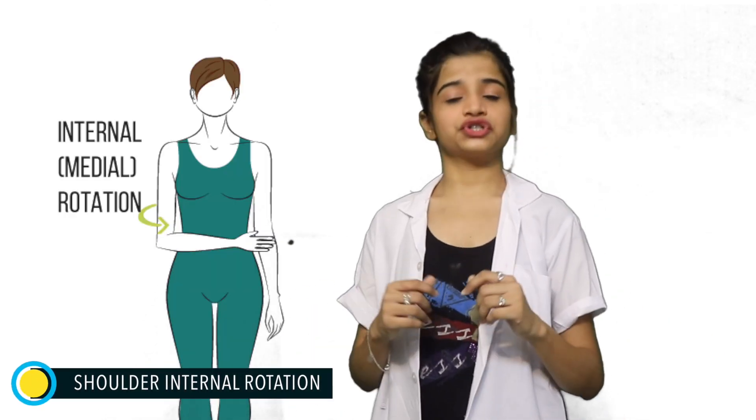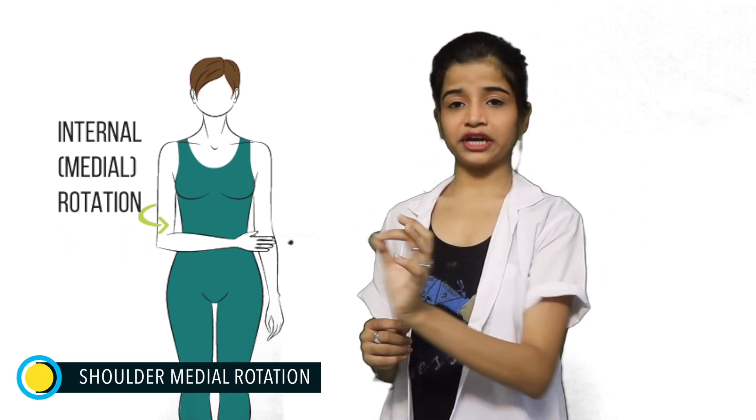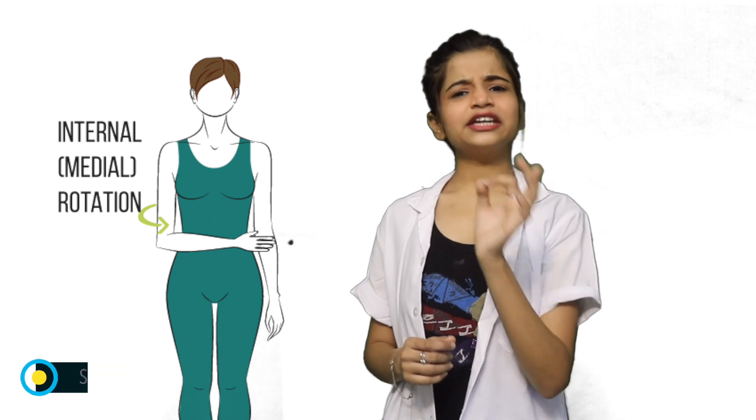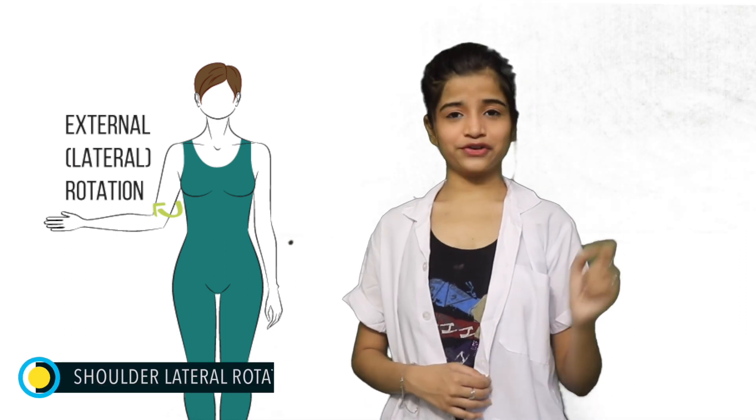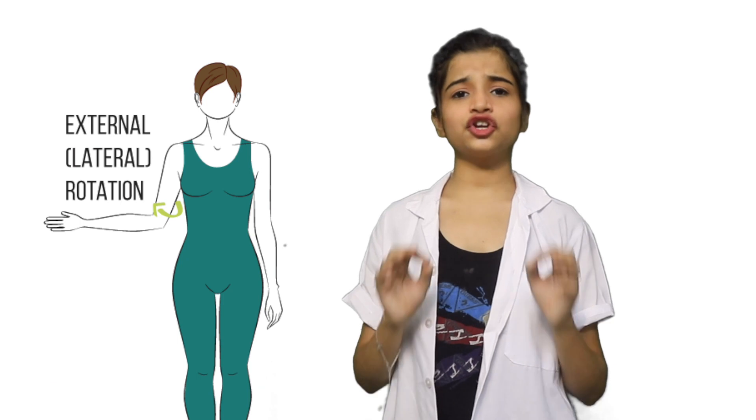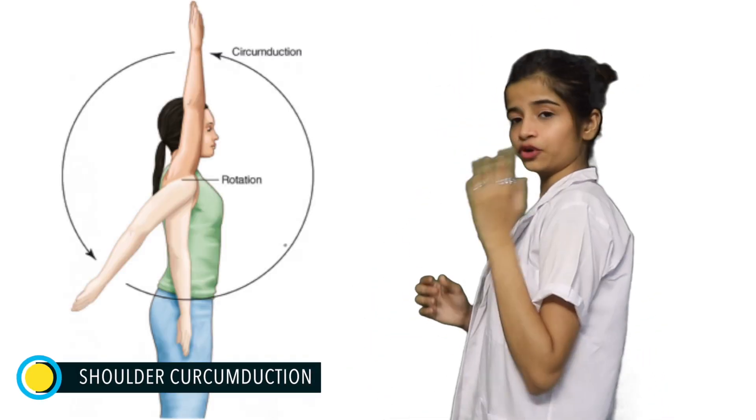Taking your hand towards the midline of the body like this is called internal rotation, which is also called medial rotation. Taking your hand back from the midline to the lateral side like this is called external rotation, also called lateral rotation. The combination of all these movements creates a new movement in the shoulder joint called circumduction — rotating your hand in 360 degrees like this.